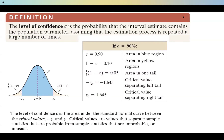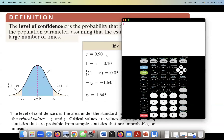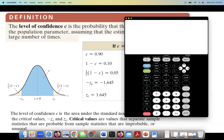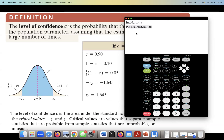We are using Calculate84, the same app you use in class. To calculate the critical value for a 90% level of confidence, go to second, then bars, and find inverse norm. In inverse norm, we need to enter the area to the left-hand side, which is 5%, so enter 0.05.